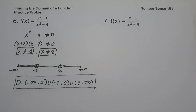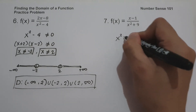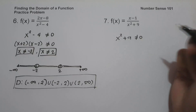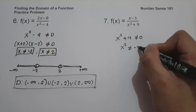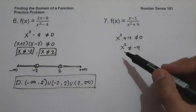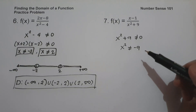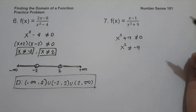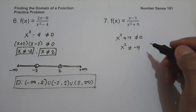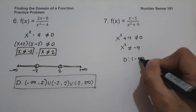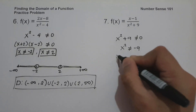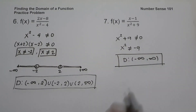On example number seven, f of x is equal to x minus 1 all over x squared plus 9. Setting the denominator not equal to zero, we move 9 to the other side to get x squared ≠ negative 9. Since a square cannot equal a negative number, there is no value of x that produces zero in the denominator, so the domain is all real numbers: negative infinity to positive infinity.